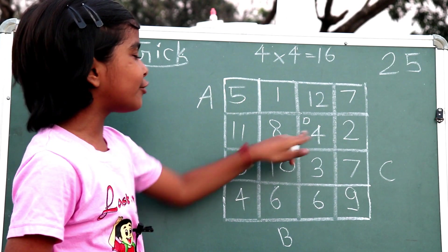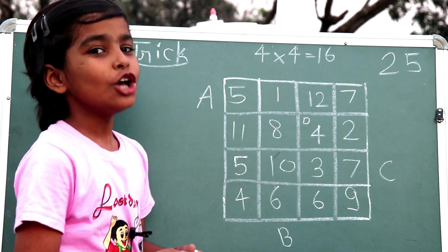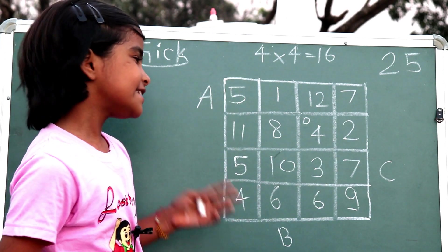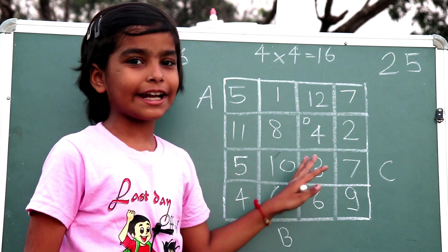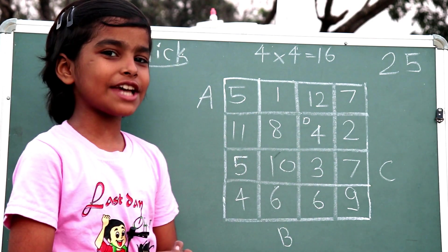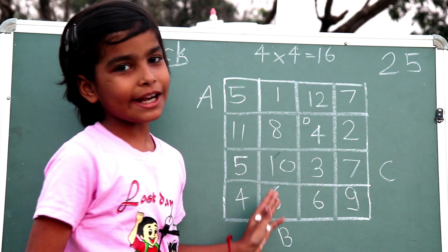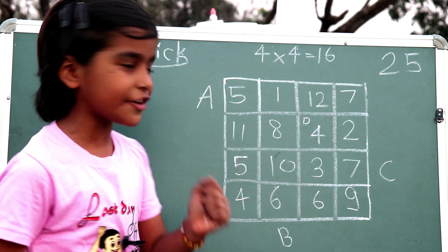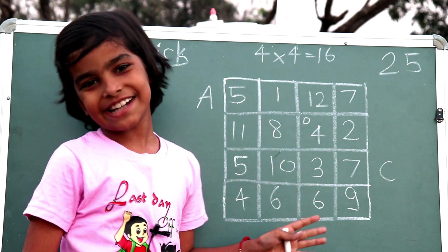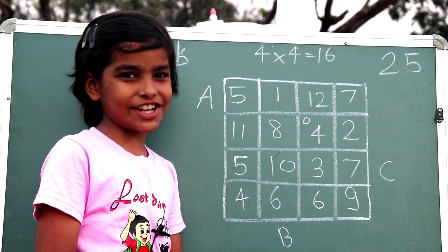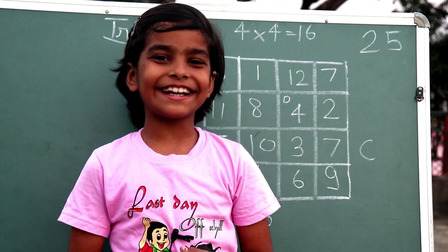When we add 8, 4, 10, and 3, we will get 25. Let's check: when we add 4 in 8, how much will we get? 12. When we add 10 in 12, how much will we get? 22. When we add 3 in 22, how much will we get? 25. This is the trick.